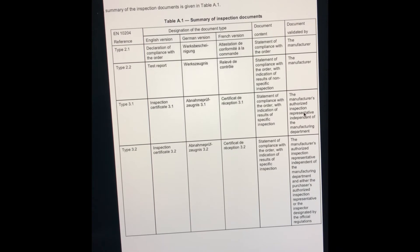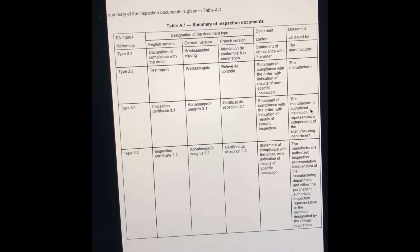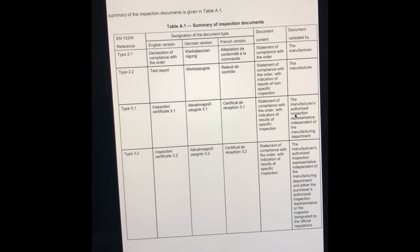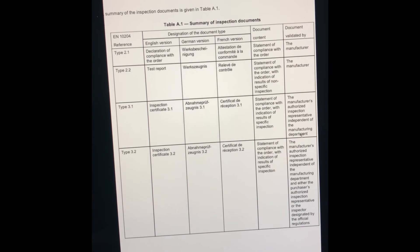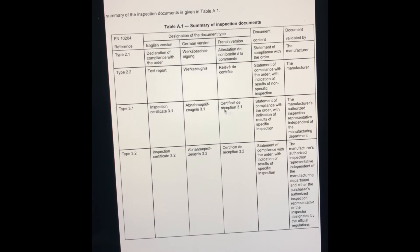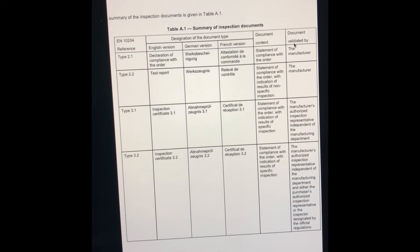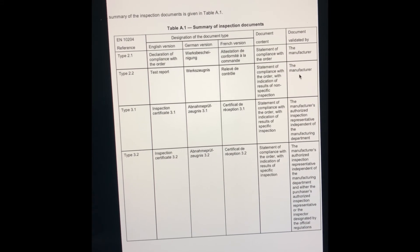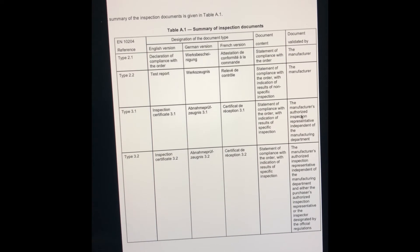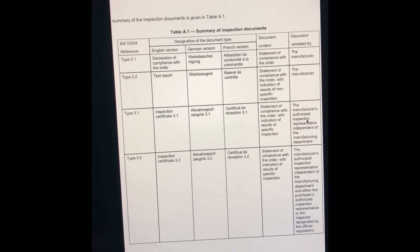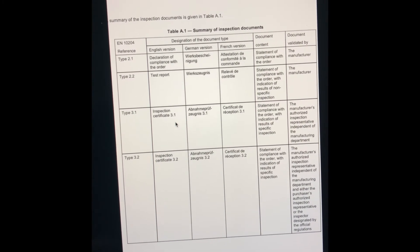An authorized inspection quality person witnesses this activity. In Type 2.1 and 2.2, the manufacturer takes part, but in Type 3.1, the manufacturer has no role - only the QC person authorizes the certificate.